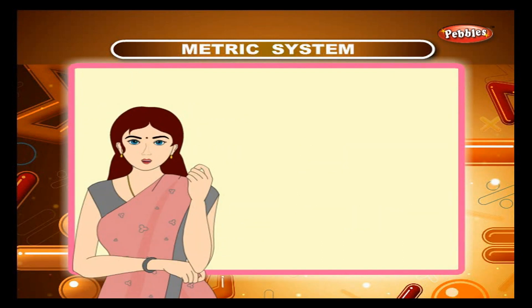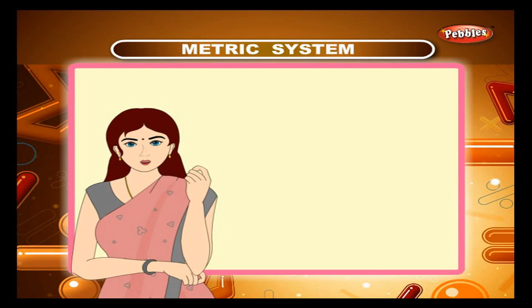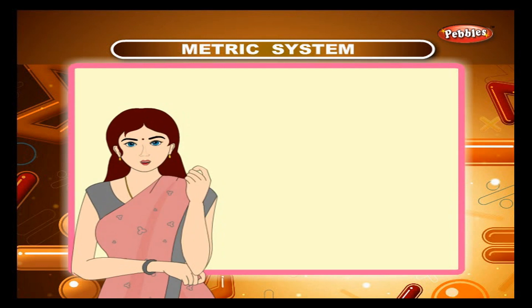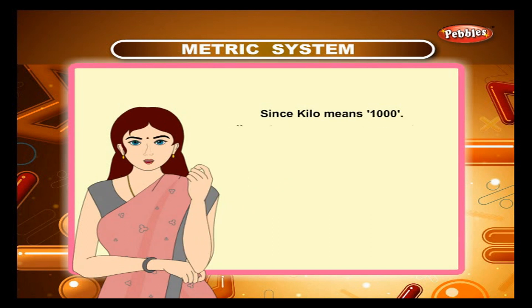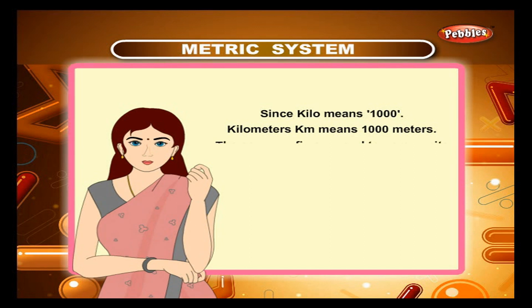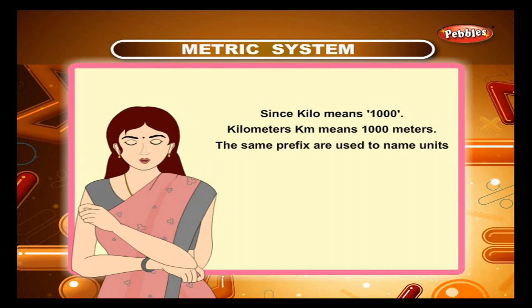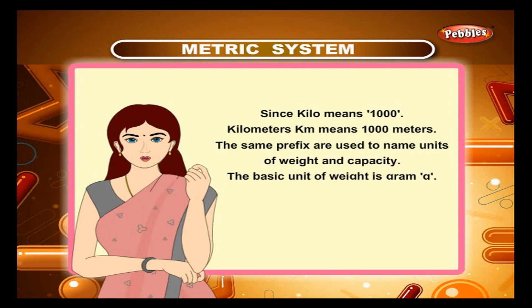To name metric units other than metre, a prefix precedes the word metre. Since 'kilo' means 1000, kilometre (km) means 1000 metres. The same prefixes are used to name units of weight and capacity. The basic unit of weight is gram (g).